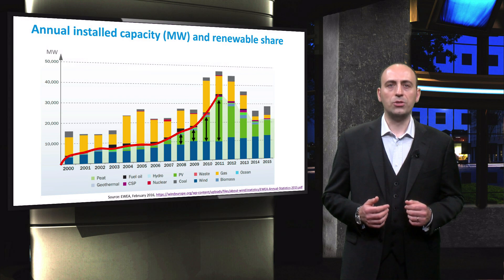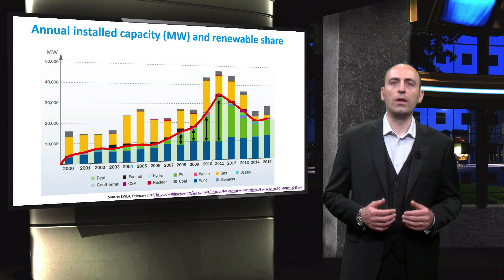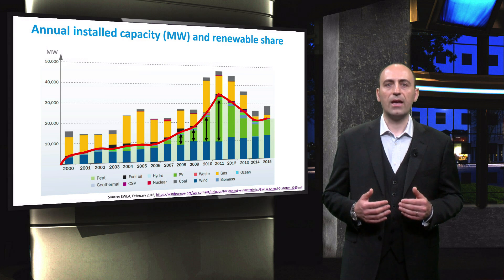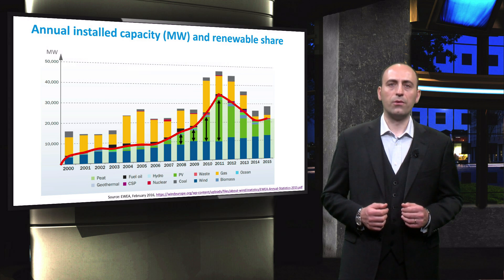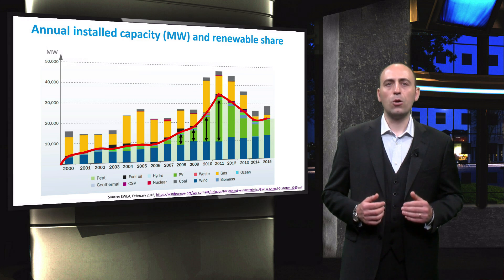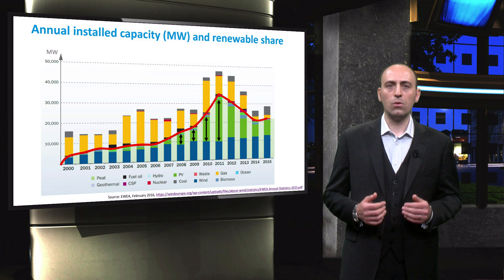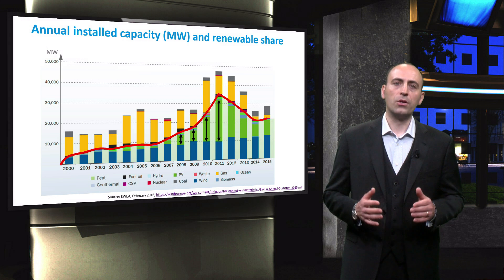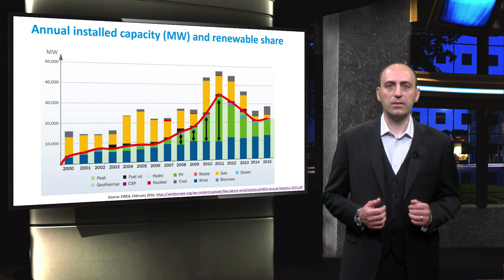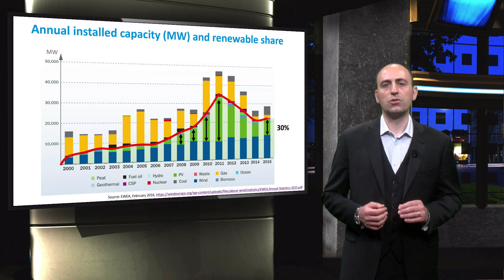Europe's power generation capacity continues to move away from fuel, oil, coal, nuclear, and gas to a higher share of renewables. Since 2013, gas decommissioned more megawatts than what it installed but still has the most overall installed capacity. From 2011 onwards, the growth of newly installed PV capacity decreased and reached a constant share of 30% of the total.